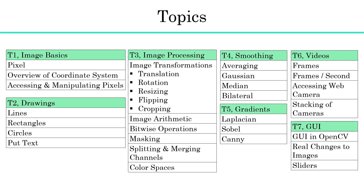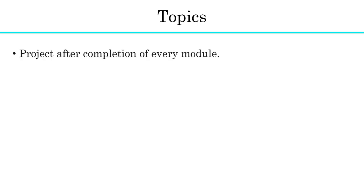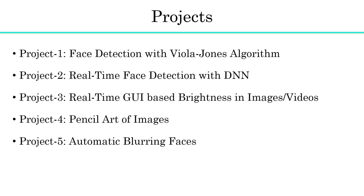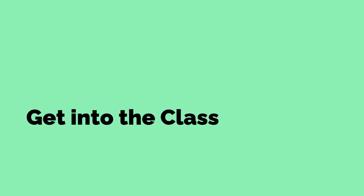In this course we will discuss topics like image basics, drawings, image processing, smoothing, gradients, videos, and GUI. This course is project-based learning - after completion of each topic, we will do small projects on that topic to help you understand practical use of the algorithms. In future, I will add more topics on computer vision algorithms and more projects related to machine learning and deep learning for computer vision. Let us get into the class and start our journey in computer vision and image processing together.